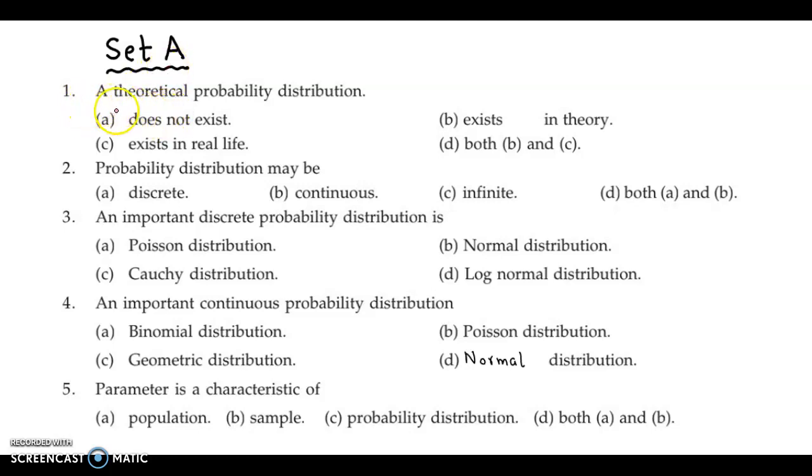The first question is a theoretical probability distribution does not exist, exists in theory, exists in real life, both B and C. Now a probability distribution that is theoretical can exist in theory as well as real life. So the correct answer is option D, both B and C.